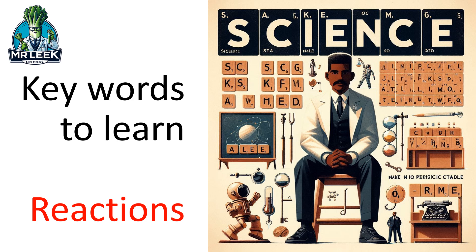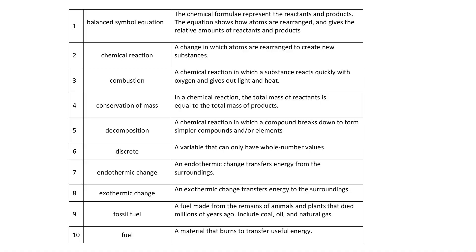These are the key words to learn for a key stage 3 reactions topic. A chemical equation has reactants on the left hand side and products on the right hand side. The equation shows how atoms are rearranged and gives the relative amounts. You've got your arrow in the middle, your reactants there and your products there. You've got to make sure you've got the same amount of atoms on the left hand side and the right hand side — that is called a balanced symbol equation.